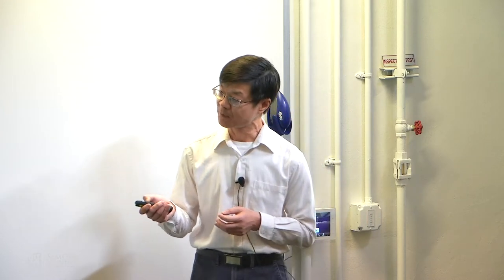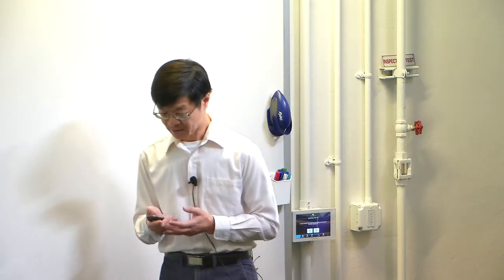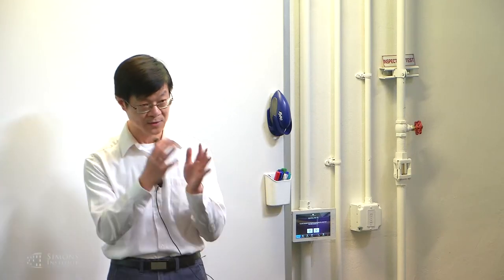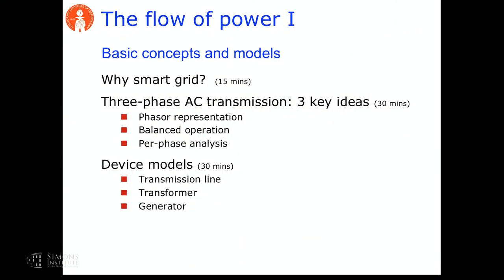Using those basic concepts, we can model basic devices — lots of devices that build this power system, from generators to transmission lines, to distribution lines, eventually to loads, transformers, regulators, all kinds of devices in the network. We'll focus mainly on the transmission line, which gives a sense of how we model that, and is also important in terms of power flows that we're interested in.